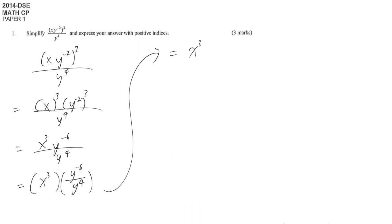x power of 3 unchanged, and then y power of above index minus below index. So it's y power of negative 10.